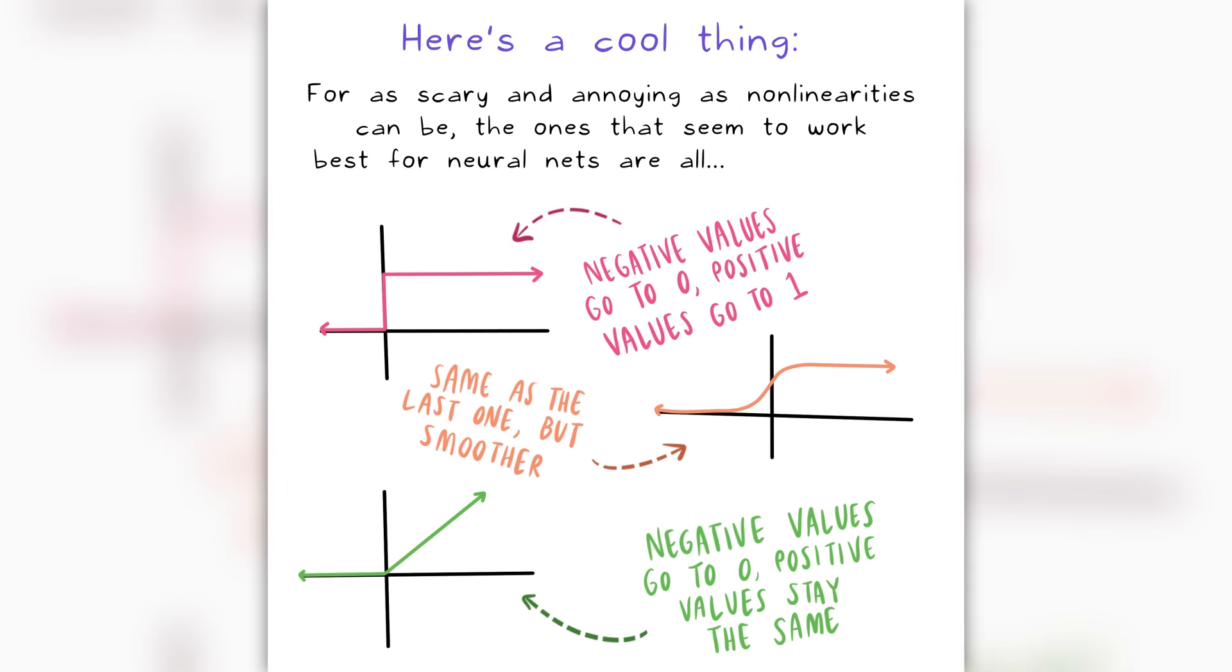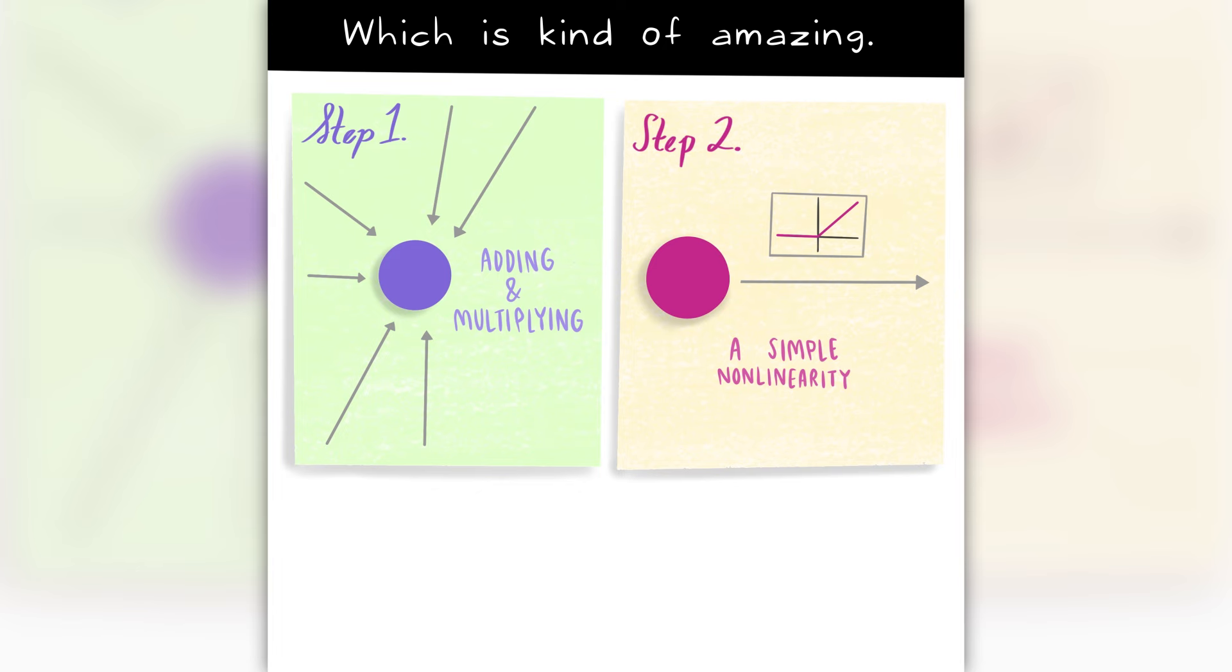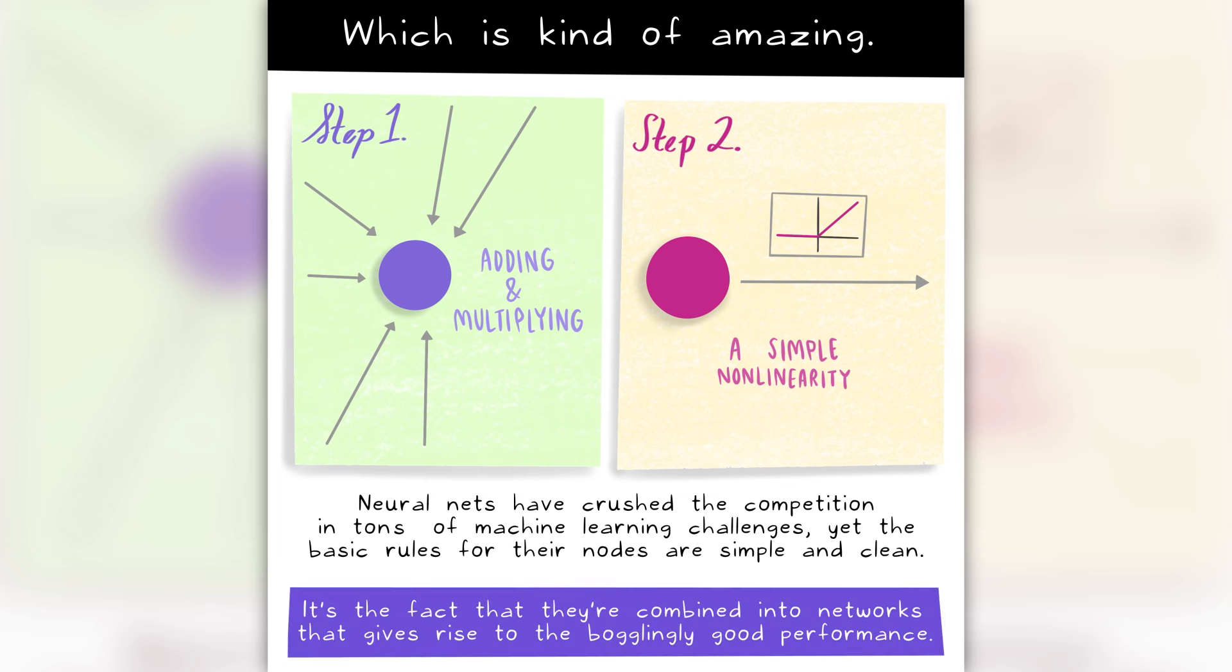Here's a cool thing: for as scary and annoying as non-linearities can be, the ones that seem to work best for neural nets are all pretty nice, which is kind of amazing. Neural nets have crushed the competition in tons of machine learning challenges, yet the basic rules for their nodes are simple and clean. It's the fact that they're combined into networks that gives rise to the bogglingly good performance.